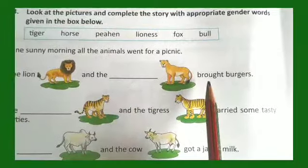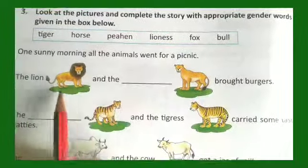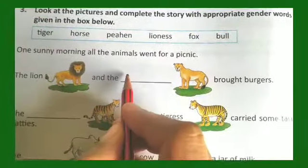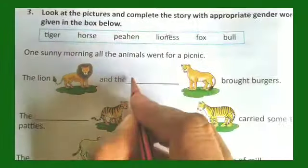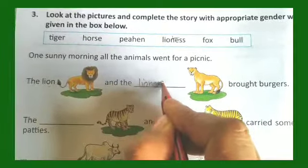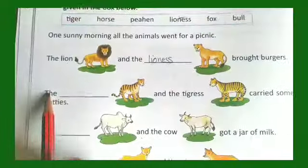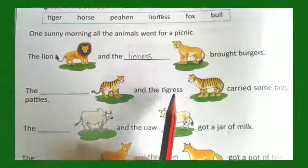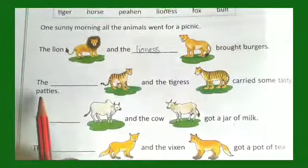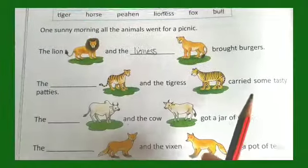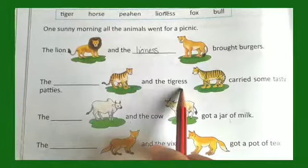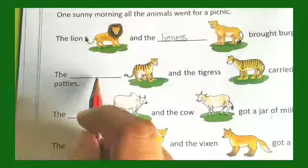So the opposite gender of lion is lioness. We write down lioness. The dash and the tigress carried some tasty patties, so the opposite gender of tigress is tiger.